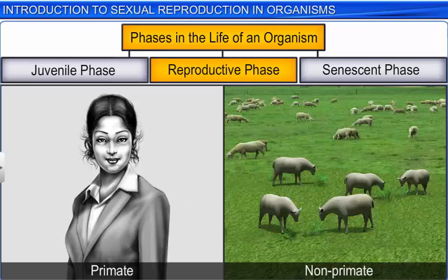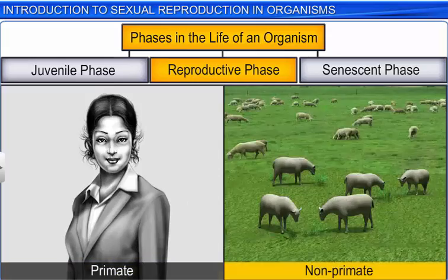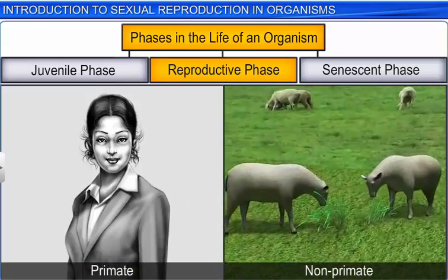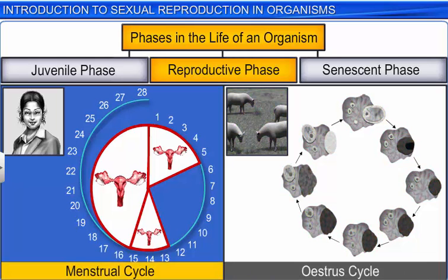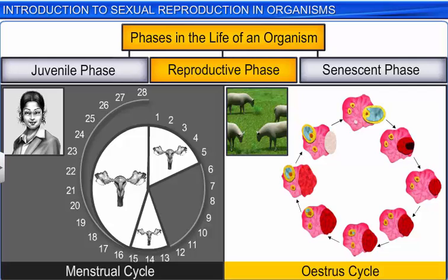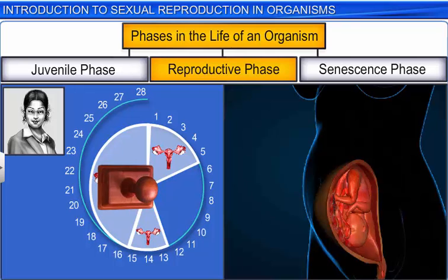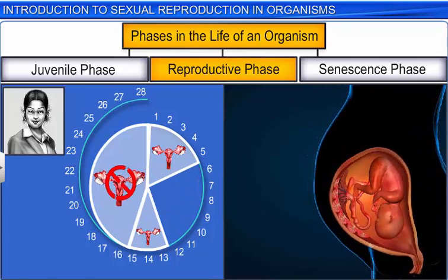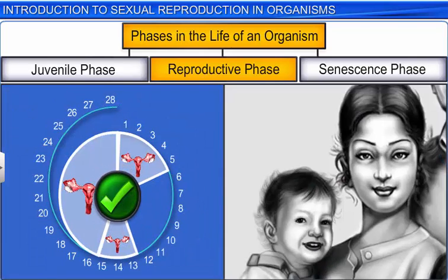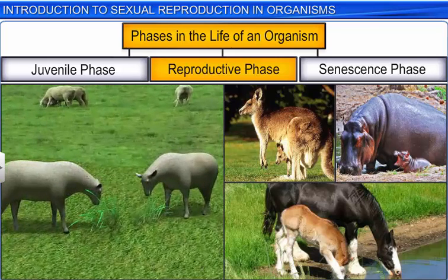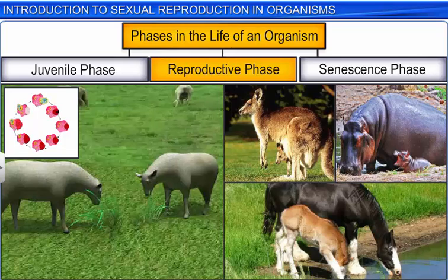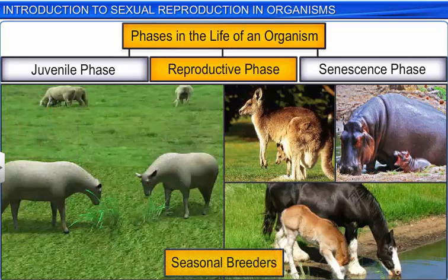Females of all placental mammals, including primates and non-primates, demonstrate cyclical changes in the activities of their ovaries and accessory ducts, as well as hormones during the reproductive phase. Known as the menstrual cycle in primates and the estrus cycle in non-primates, these cycles stop once the female becomes pregnant and resume after the female has given birth. Placental mammals, especially those living in the wild, exhibit these cyclical changes and breed only during favorable seasons, and are therefore called seasonal breeders.